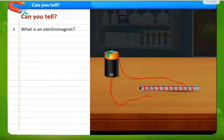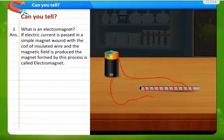Now what is an electromagnet? Basically the word electromagnet tells that magnetism is derived on the basis of electricity. Hence the name electromagnet. If electric current is passed in a simple magnet wound with the coil of insulated wire, that is covered or coated wire, and the magnetic field is produced, the magnet formed by this process is called electromagnet.